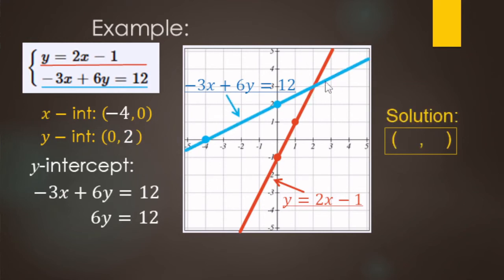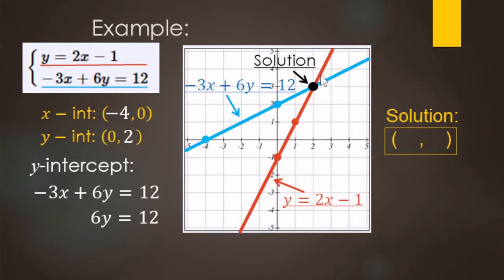The solution is where the two lines intersect. The blue line is all ordered pairs that work for the blue equation, and the red line is all ordered pairs that make the red equation true. The point that makes both true is right there — x is 2 and y is 3, so the ordered pair is two comma three.